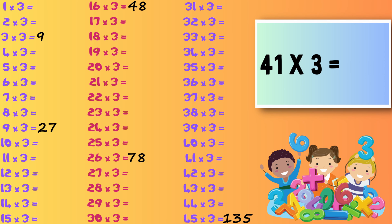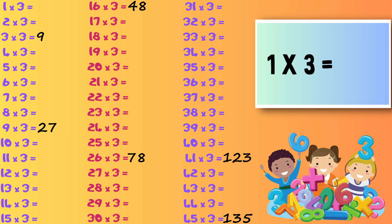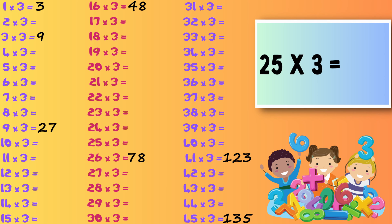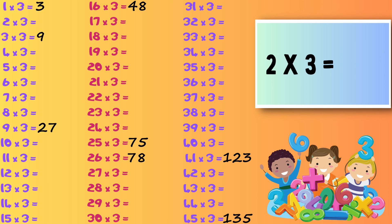Forty-one times three — one hundred and twenty-three. Twenty-five times three — seventy-five. Two times three — six.